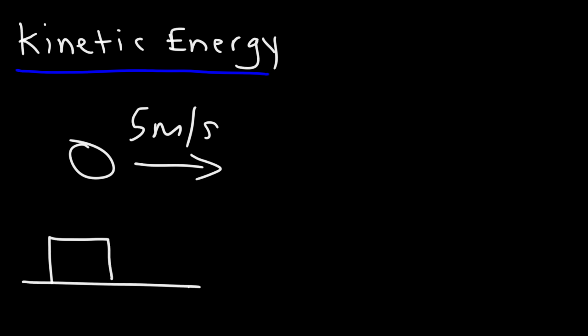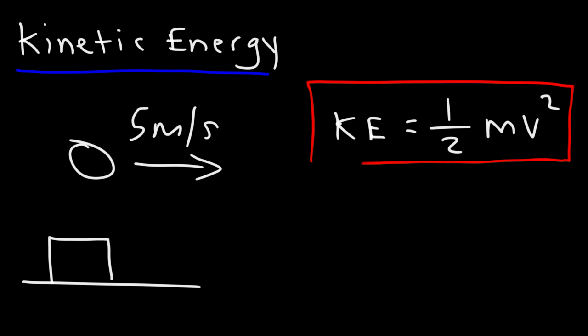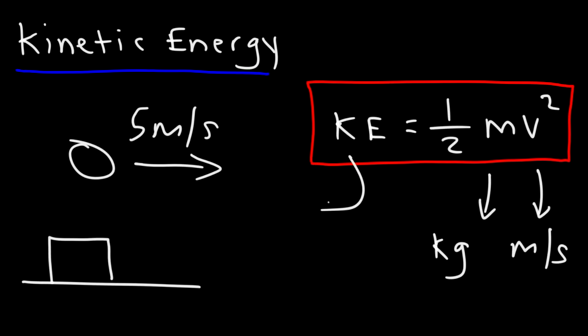If you have a block that's at rest, just sitting on the ground doing nothing, it has no kinetic energy. So anything with mass and speed has kinetic energy. The formula for it is KE equals 1 half mv squared. Kinetic energy depends on the mass and the speed of the object. The units for m is the kilogram, and the units for speed is typically meters per second. If you use those units, the kinetic energy will be in joules.